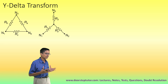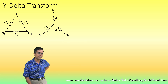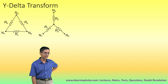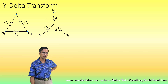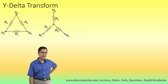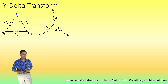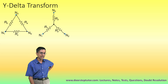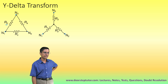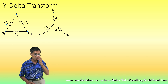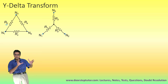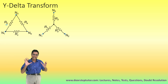The Y-Delta transform means that these two networks between three nodes N1, N2, and N3 are exactly equivalent, provided that a very special kind of relationship exists between resistances RA, RB, RC and R1, R2, R3. So provided that relationship is maintained, these two resistive networks are exactly equivalent.